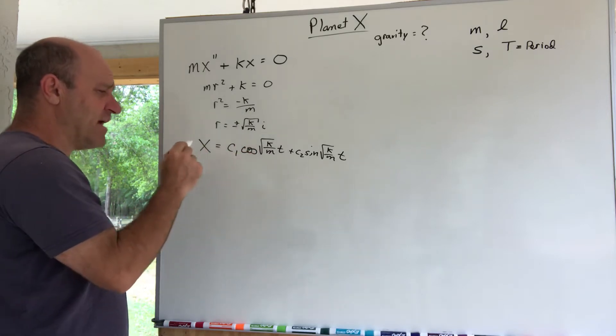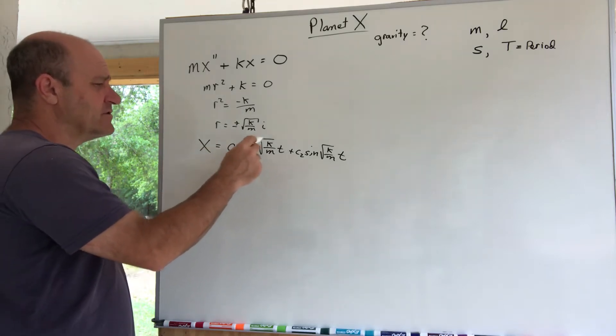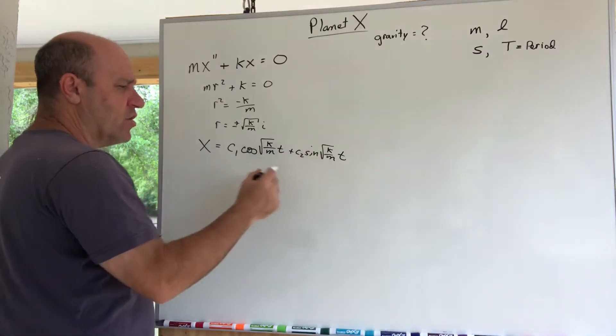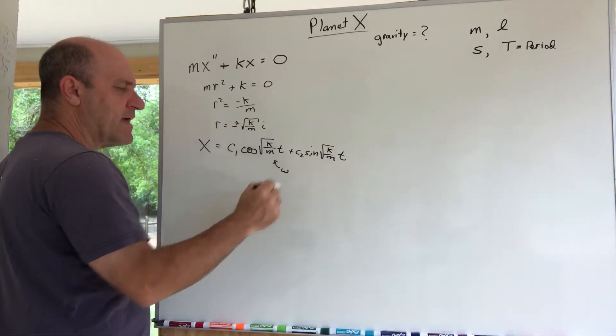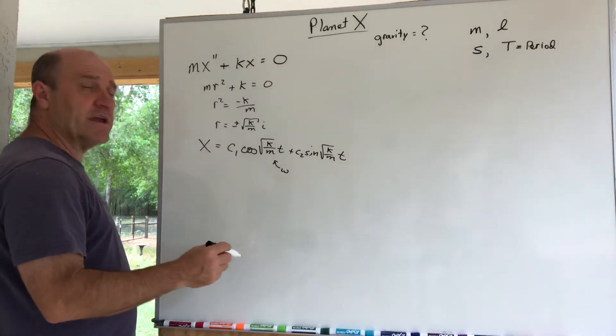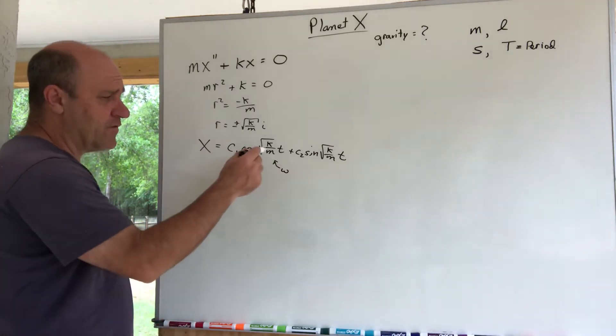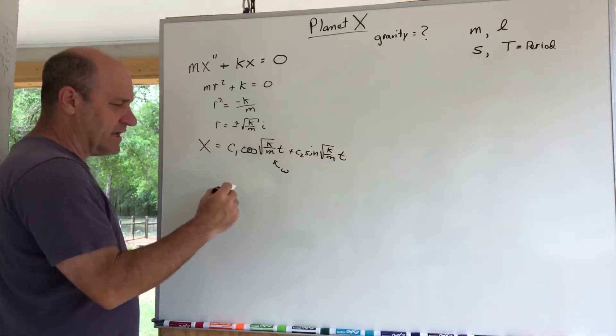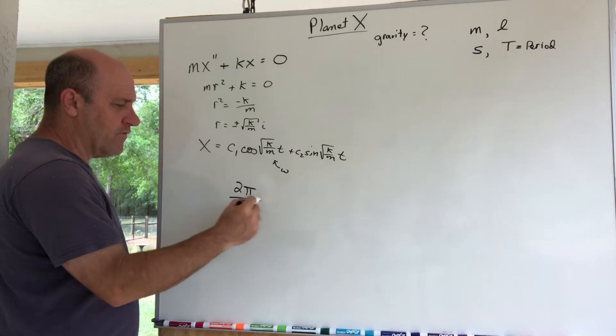And then you would write your answer X = C₁cos(√(K/m)·t) + C₂sin—you know, and we kind of refer to this as omega. And if I was to calculate the period, the period is always 2π over this number omega.